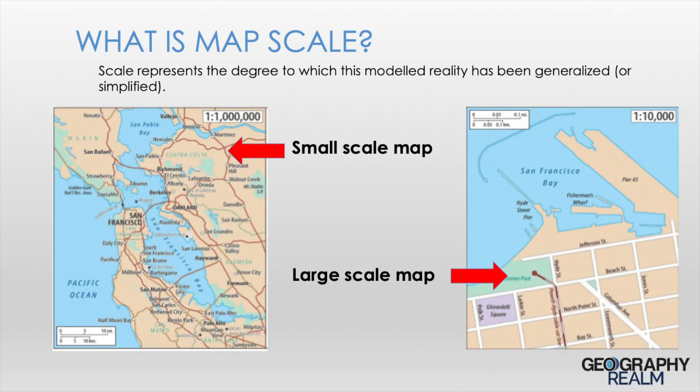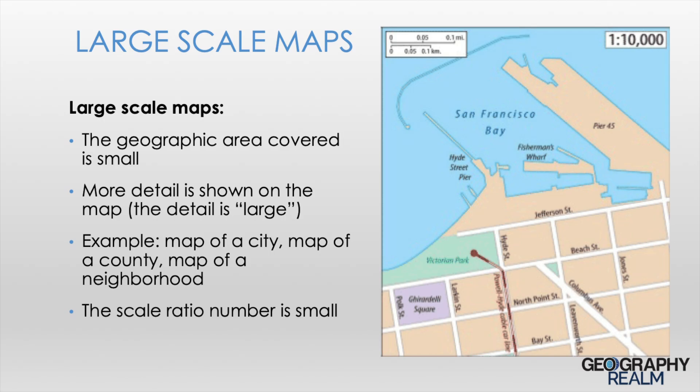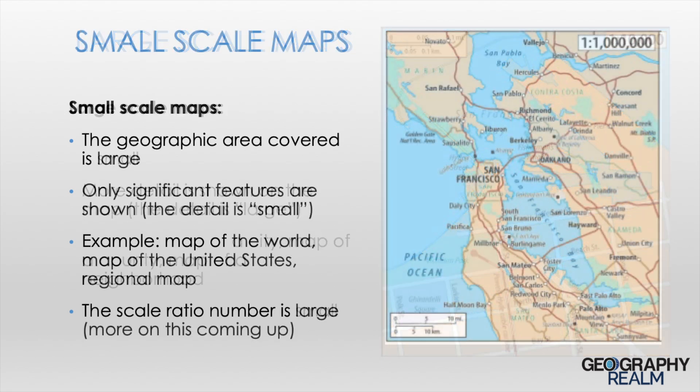Map scale is typically described in two different ways. There are large scale maps and there are small scale maps. Large scale maps show a smaller geographic area but typically contain a higher or larger amount of detail. Small scale maps tend to show a larger geographic area but contain less detail or a smaller amount of detail.